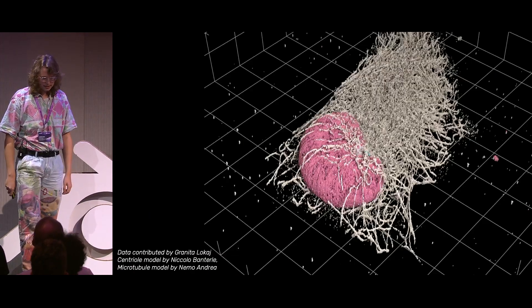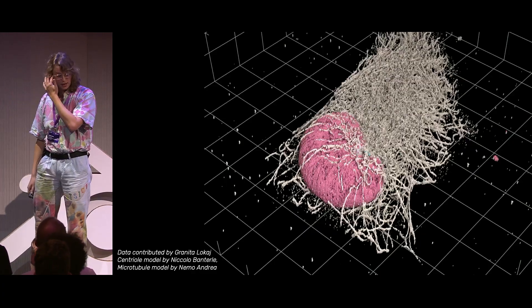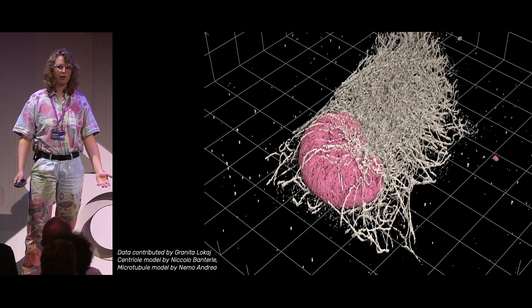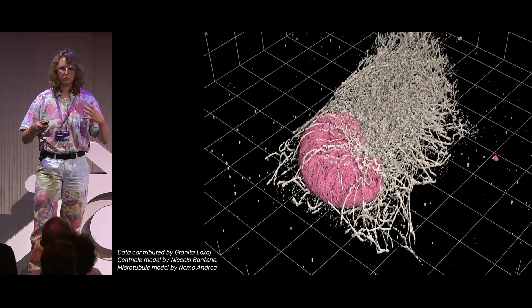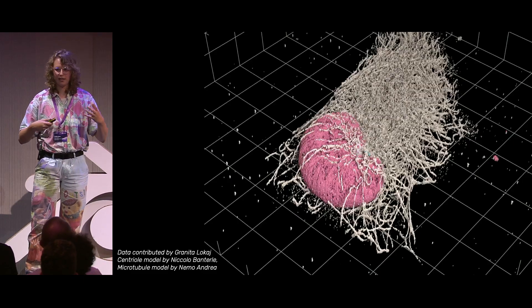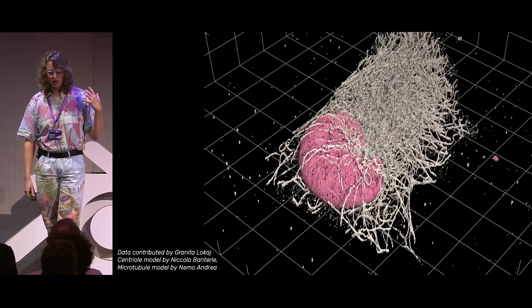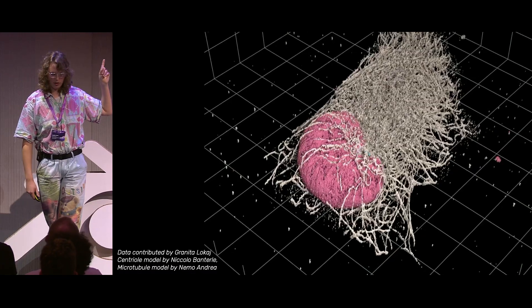And then, the last data set I'm showing is this human cell, this is actually the same one that was in the example. Here in pink we have the nucleus, and in white we have the skeleton of the cell. So this is also the traffic network, and this is really relevant in cancer and in understanding how cells go wild and how they move.